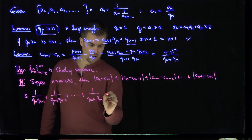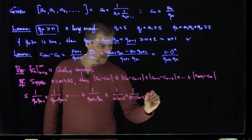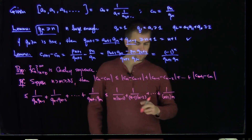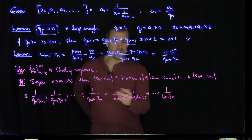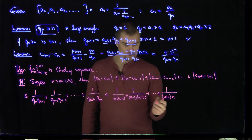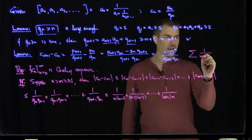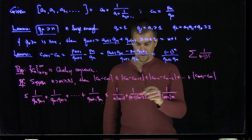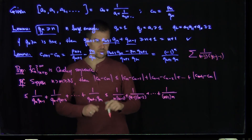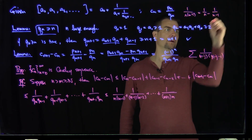To get a useful bound, I'll make all the denominators smaller using the trivial bound qk ≥ k. This gives an expression less than or equal to 1/(n·(n-1)) plus 1/((n-1)·(n-2)) plus ... down to 1/((m+1)·m). The key observation is that this sum telescopes. Each term 1/(k·(k-1)) has the partial fraction decomposition 1/(k-1) minus 1/k.